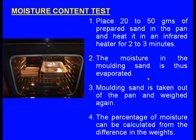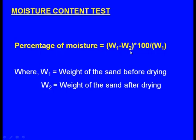Initially we have weighed the sand, then the molding sand is taken out from the pan and weighed again. The percentage of the moisture can be calculated from the difference in the weights. The percent of moisture is equal to W1 minus W2 multiplied by 100, whole divided by W1, where W1 is the weight of the sand before drying and W2 is the weight of the sand after drying. This is the old and traditional method of finding the moisture in the green sand.